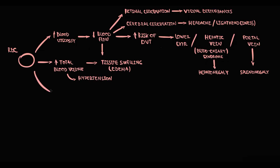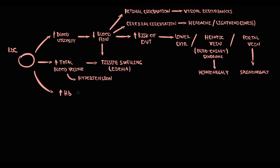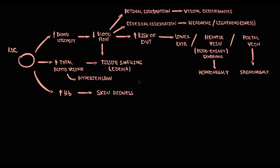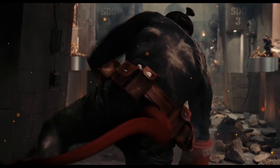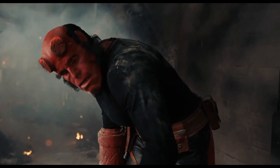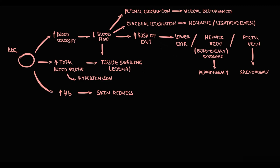With the increase in red blood cells in polycythemia, hemoglobin concentration increases. Hemoglobin determines the color of our blood — the higher the hemoglobin concentration, the more intense the red color. In polycythemia, accumulation of this intensely red blood in capillaries causes redness of the skin. In fact, when a person comes to a hematology department, you can sometimes visually tell they have polycythemia based on skin color. Together with tissue swelling, we call this plethoric complexion — characterized by swelling and skin redness.